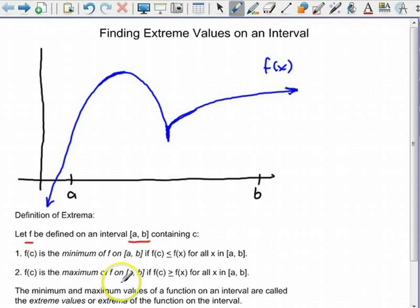f(c) is the maximum of f on the closed interval a to b if the y value when x equals c is greater than or equal to all the y values for all the x's in a to b. So what does that mean? Well, let's check out right here.